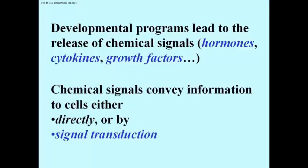Chemical signals, signals outside of a cell, can convey information to the cells either directly, that is to say by getting into the cell, interacting with a receptor molecule, usually a receptor protein in the cell, and then going about the business of getting a cell to respond, or by signal transduction.